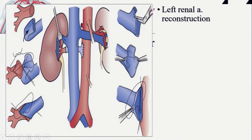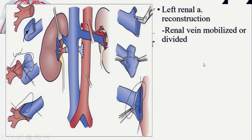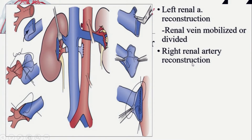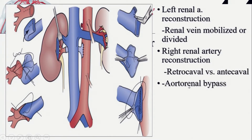For reconstruction: mobilize the renal artery, move the renal vein out of the way on the right, or divide it on the left. For the right renal artery you can route the bypass above or below the vena cava — but above the vena cava risks stenosis as the artery plumps and pushes down on the cava, so most people route it behind. The bypass comes off the aorta when possible.